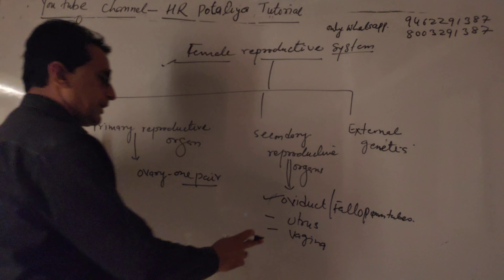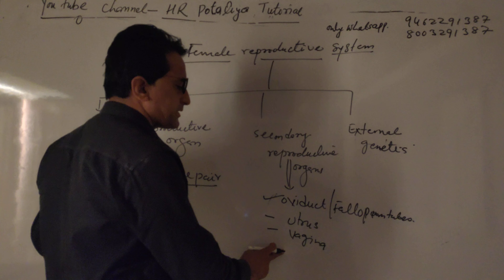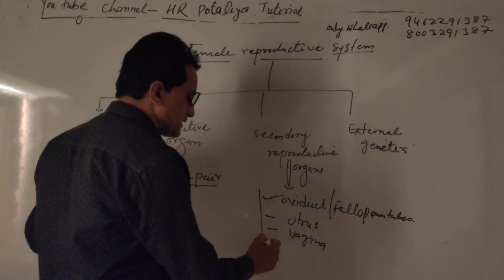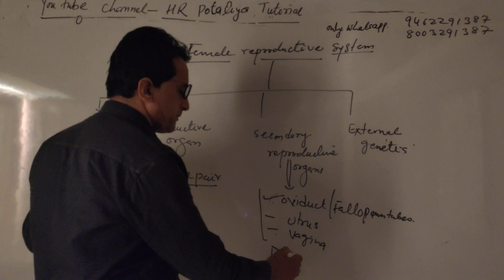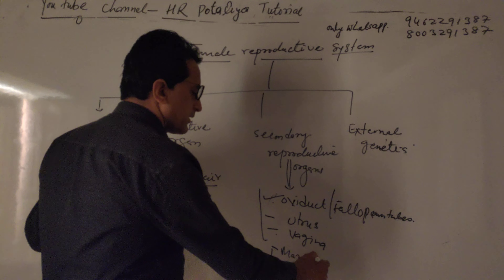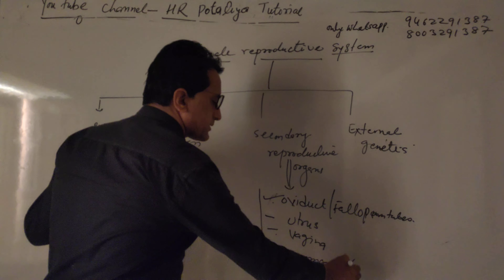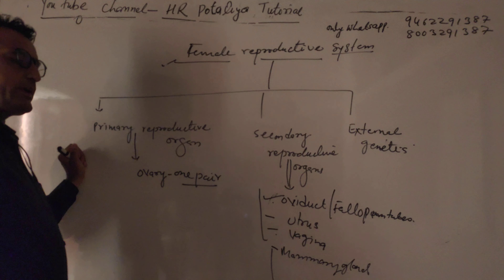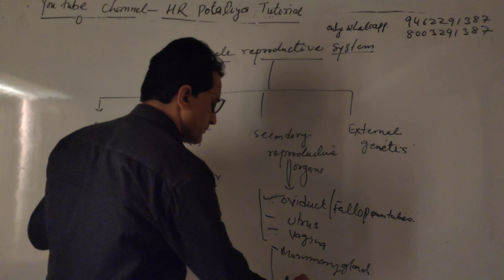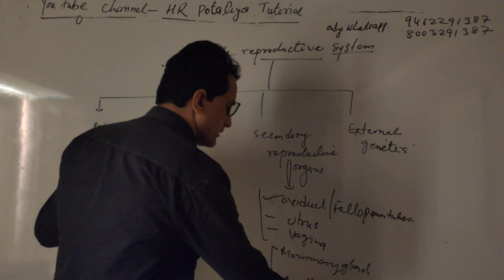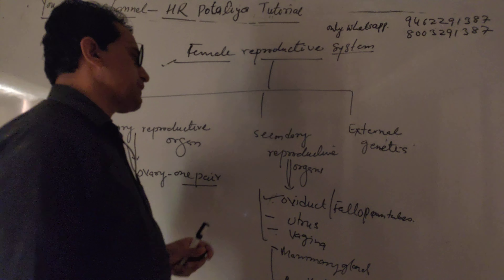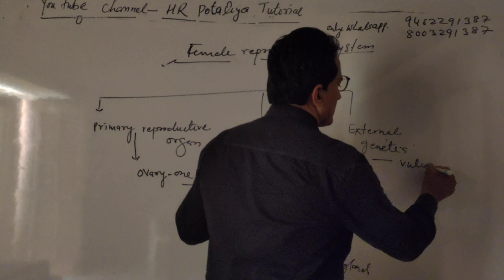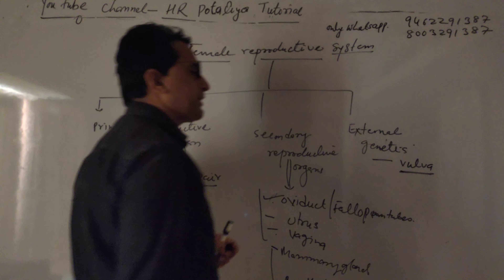In addition to the tubular structures, glands are also functioning. One is the mammary gland and the second is the Bartholin gland. The Bartholin gland secretes a mucus-like structure. The external genitalia is the vulva, which is again classified into five parts.